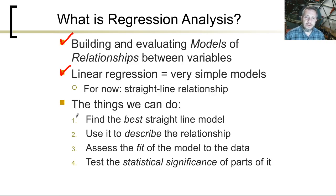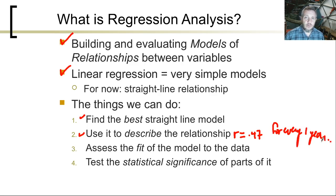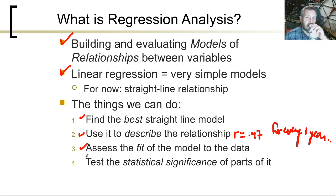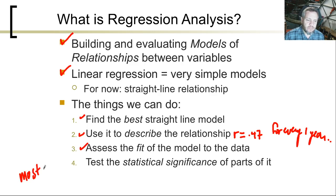A lot of what we can do is find the best straight line model and use it to describe the relationship — like saying r equals .47 or something. Or we talk about the line itself and say for every one year of child education, we predict that 2.3 new legislative measures will be passed. Once we've got the model and know how it works, we try to see how good it is, how well it fits the data. We're going to look at residuals, which we've talked about previously. Most of the time we're going to test the statistical significance of parts of the model.